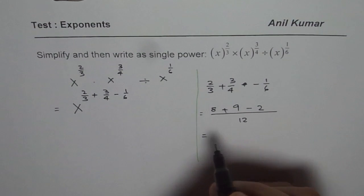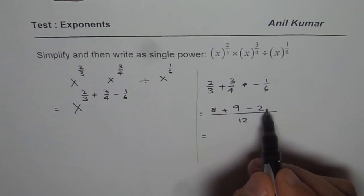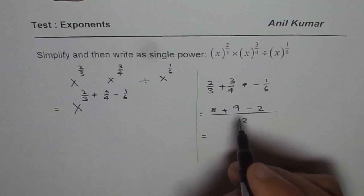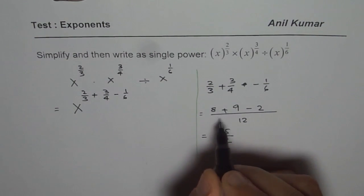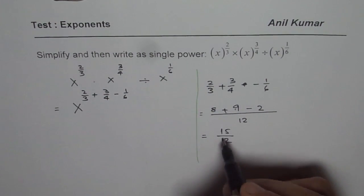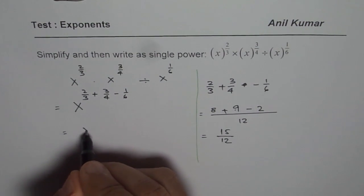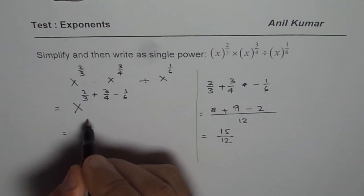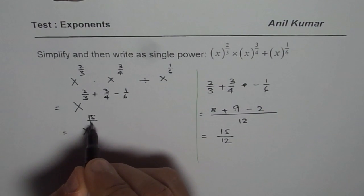And that gives you 9 minus 2 is 7. You can add that 7 to 8. So you get 15 over 12. It is actually better to first add, 17 minus 2, 15 over 12. So you get your answer as x to the power of 15 over 12.